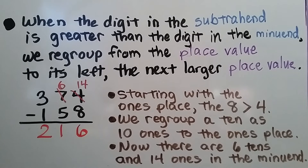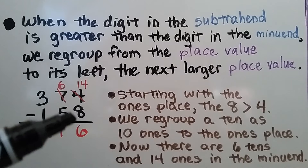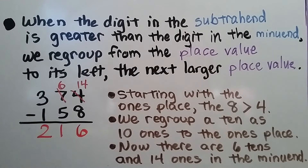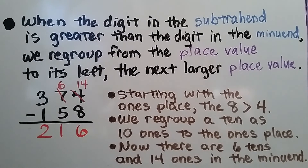When the digit in the subtrahend is greater than the digit in the minuend, we regroup from the place value to its left — the next larger place value. This 4 is less than the 8, so we had to regroup. Starting with the ones place, that 8 is greater than the 4. We need to regroup a 10 as 10 ones to the ones place. Now there are 6 tens and 14 ones in the minuend. Then we subtract the tens: 6 minus 5 is 1. We subtract the hundreds: 3 minus 1 is 2. And we have 216 for our difference.